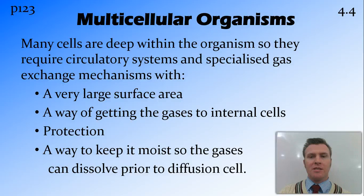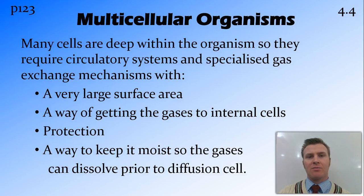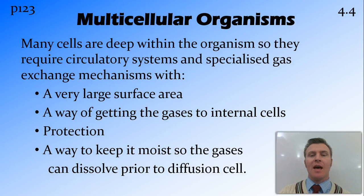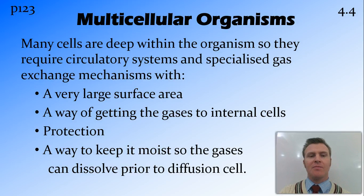Once we get into multicellular organisms, many of the cells are actually inside the organism — they're not on the surface and therefore not in contact with gas. So what we need is a specialised circulatory system to move the gas around, as well as a specialised gaseous exchange system to get the gas into the blood or the circulatory system. And all gaseous exchange systems, or respiratory systems, have a few things in common.